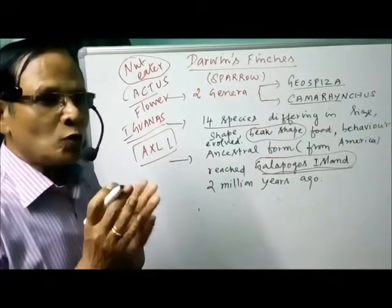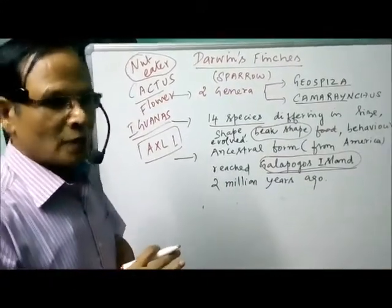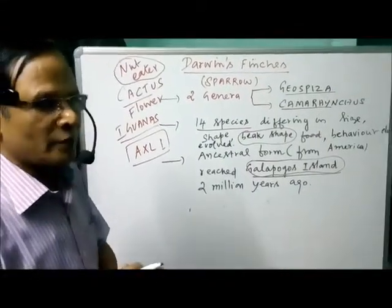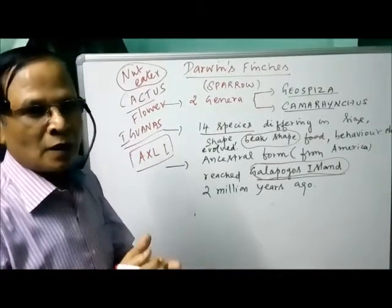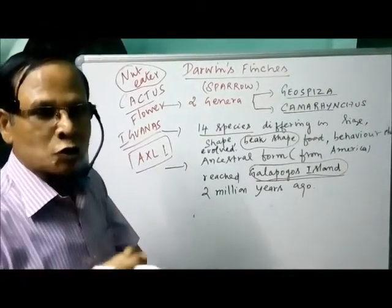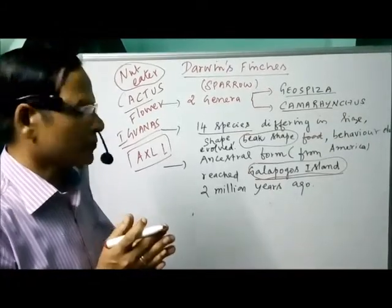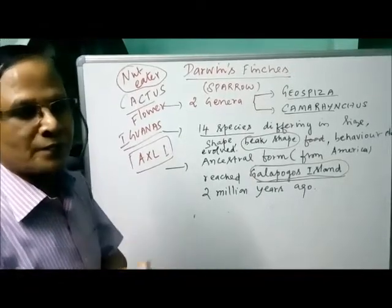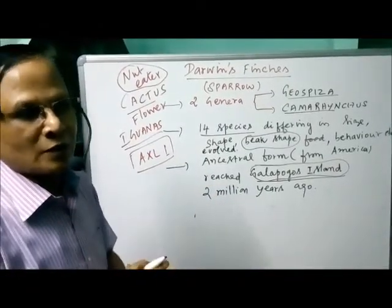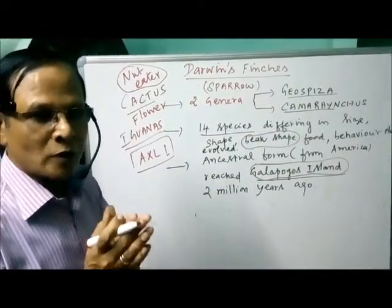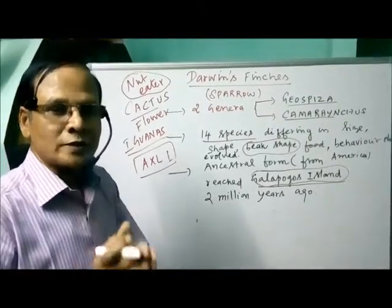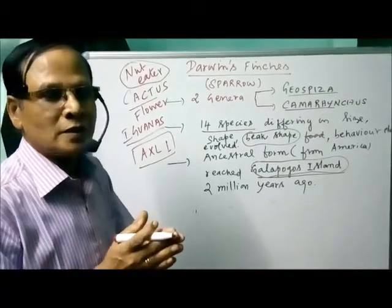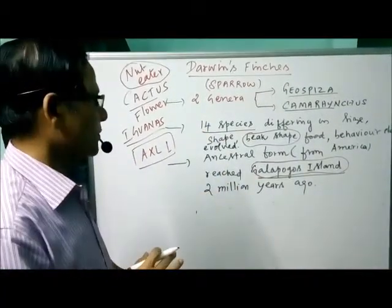When more than one adaptive radiation occurs in an isolated geographic area, and the resulting forms have the same structural and functional similarity, it is because of convergent evolution. More than one adaptive radiation in an isolated geographical area, having same structural and functional similarity, is due to convergent evolution.